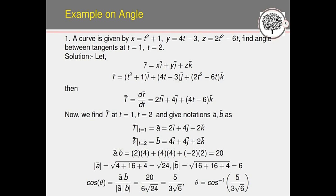We need the tangent at two points. At t = 1 (call it vector a): T = 2i + 4j + (4·1 − 6)k = 2i + 4j − 2k. At t = 2 (call it vector b): T = 4i + 4j + (8 − 6)k = 4i + 4j + 2k. Now compute the dot product a·b = (2×4) + (4×4) + (−2×2) = 8 + 16 − 4 = 20.